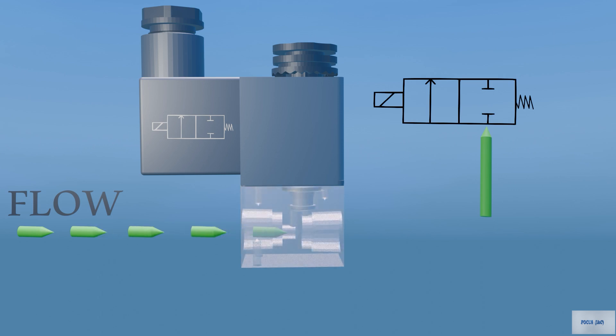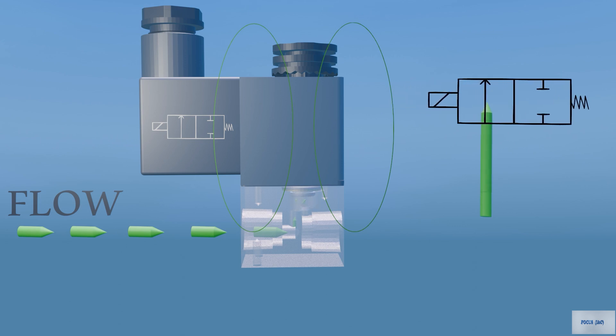When electrical current runs through the solenoid coil, it creates a magnetic field that either pulls a plunger or shifts a diaphragm, allowing flow between the inlet and outlet.